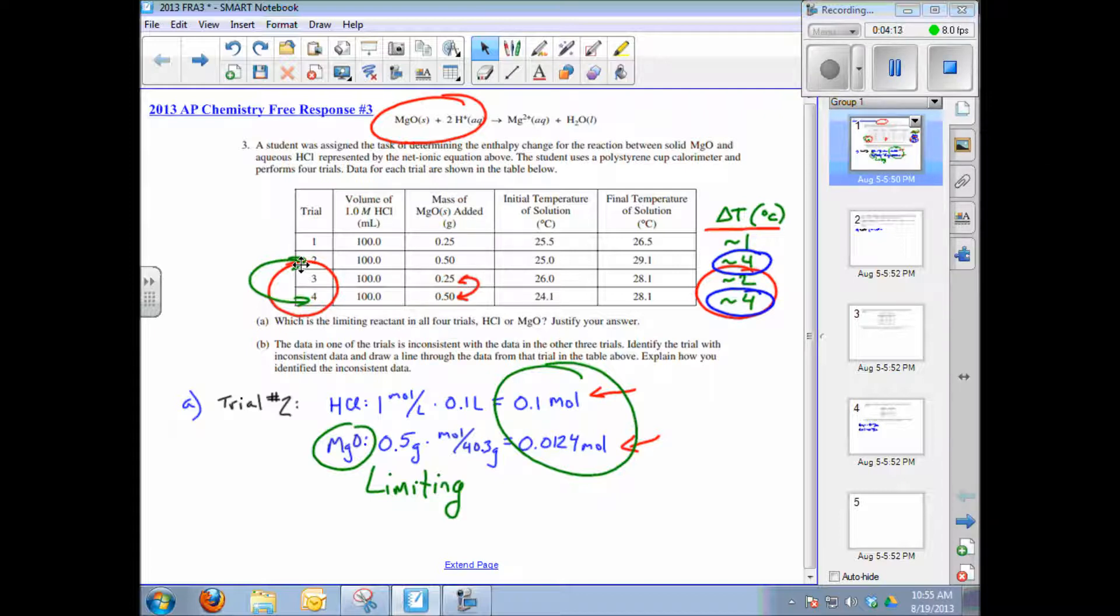However, in the repeated trials one and three, we did not. Trial one seems to be different from everything else in the data table; it doesn't reflect the trend where we double the amount of limiting reactant and double the temperature change. Trial one is the one that is inconsistent. We cross that one out. The justification is based on the identification of magnesium oxide as the limiting reactant: if we double it, we should double the heat change, and we don't in trial one.